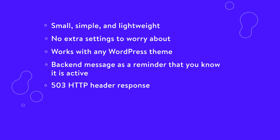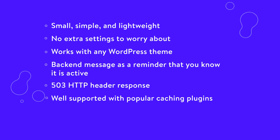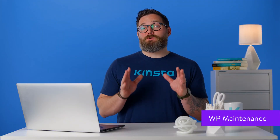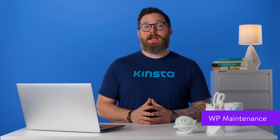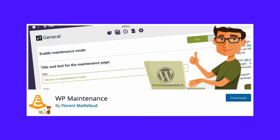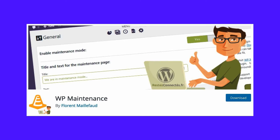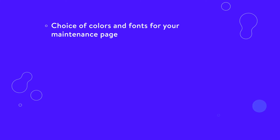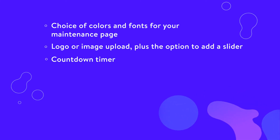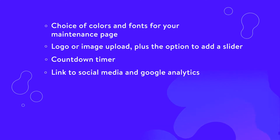The WP Maintenance plugin has over 30,000 installations with a 4.5 star average rating. It hasn't been translated into English yet, but will work fine on any English language site as any text seen by users is input by you. The plugin includes customization options such as choice of colors and fonts, logo and image upload, plus the option to add a slider, a countdown timer, links to social media and Google Analytics, and edit access by user role.